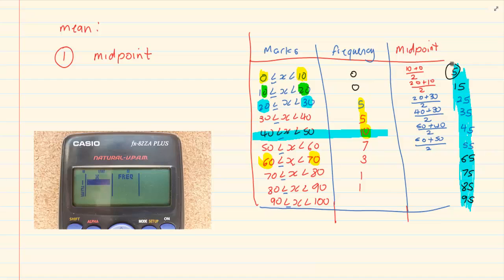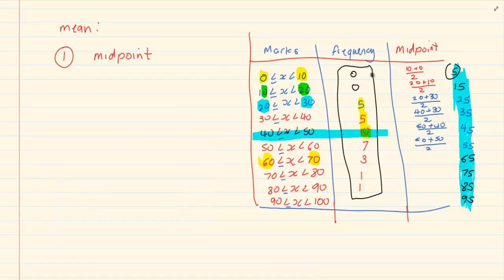Now, you are going to press Mode, go to number 2 which is Stats, then press number 1 which is Variance. You will see X and Freq columns. Under X you put your midpoint: 5, 15, 25, 35, 45, 55, 65, 75, 85, 95. Under Frequency, enter 0, 0, 5, 5, 10, 7, 3, 1, 1, and 0.